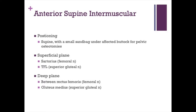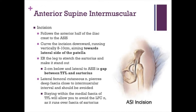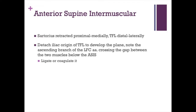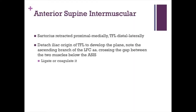The superficial plane is between the sartorius and tensor fasciae latae, with the inner-nervous plane being the femoral and superior gluteal nerves. The deep plane is between the rectus femoris and the gluteus medius. The incision is typically two centimeters inferior and lateral to the ASIS, aiming at the lateral border of the patella for about eight to ten centimeters. The sartorius is retracted proximally and medially; the TFL distally and laterally. For total hip replacement, the blood supply is largely irrelevant as the femoral head is no longer needed.